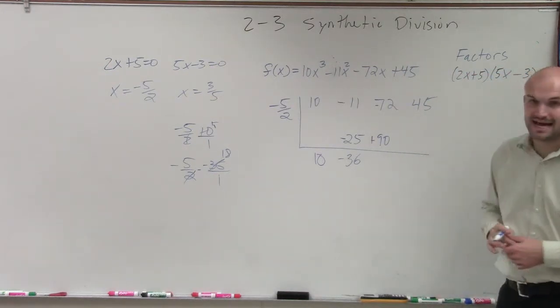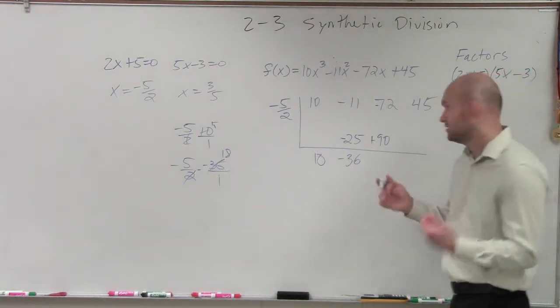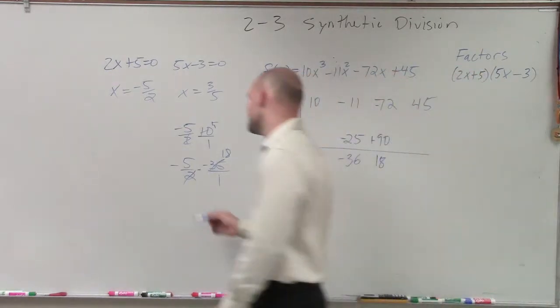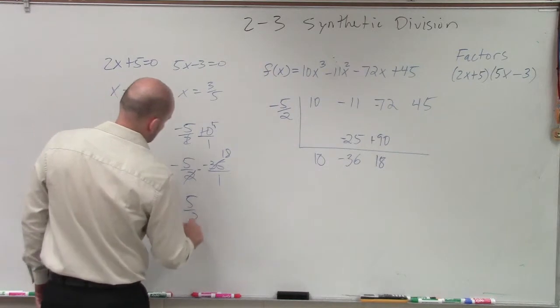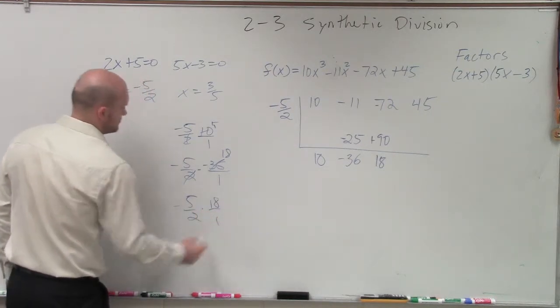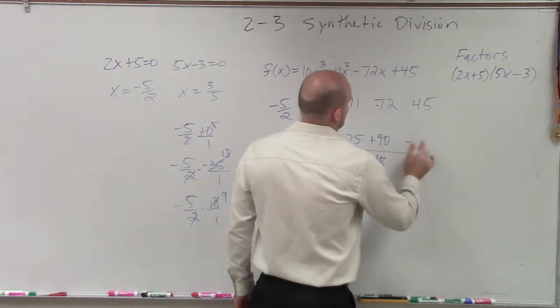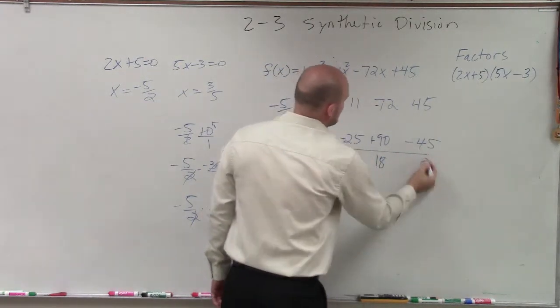So then I have negative 72 plus 90 which is going to be 18. 18 times negative 5 halves is 45, negative 45. And this becomes 0.